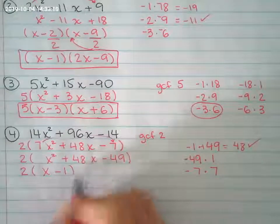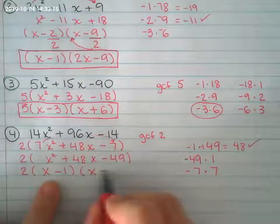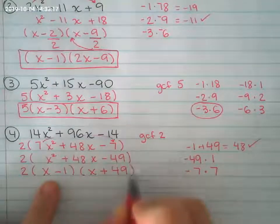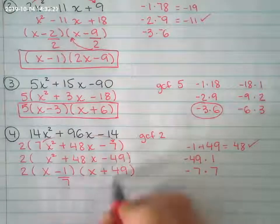So my factors are x plus 1, x minus 1, x plus 49. Because we started out by multiplying by 7 right here, I need to remember to divide by 7.